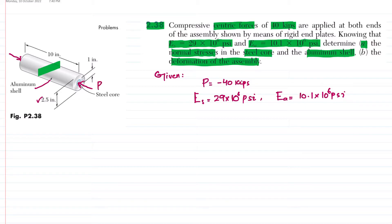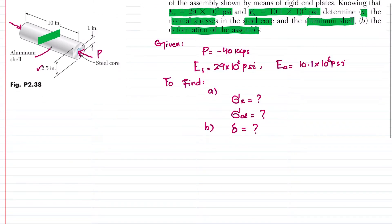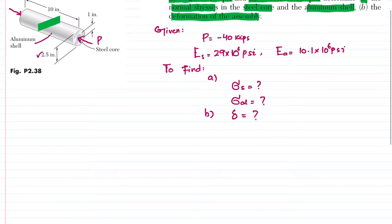We need to find: in Part A, the normal stress in the steel core and the normal stress in the aluminum shell; and in Part B, the deformation of the assembly. Now let's move toward the solution.